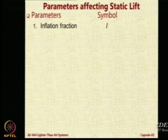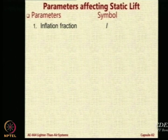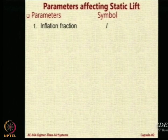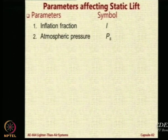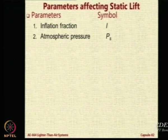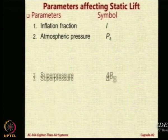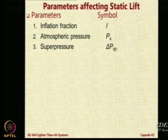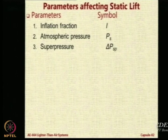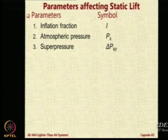The first parameter that we will look at is inflation fraction. This, I hope you remember, is the ratio of the lifting gas volume occupied upon the total volume of the envelope. So if there is no ballonet, this fraction is 1. Then we will look at the change in atmospheric pressure — I call it PS because PS is the standard pressure. We will look at the effect of change in super pressure PS, which is the pressure above the atmosphere. If the envelope is filled with gas at a higher pressure than ambient, that additional pressure is the super pressure.